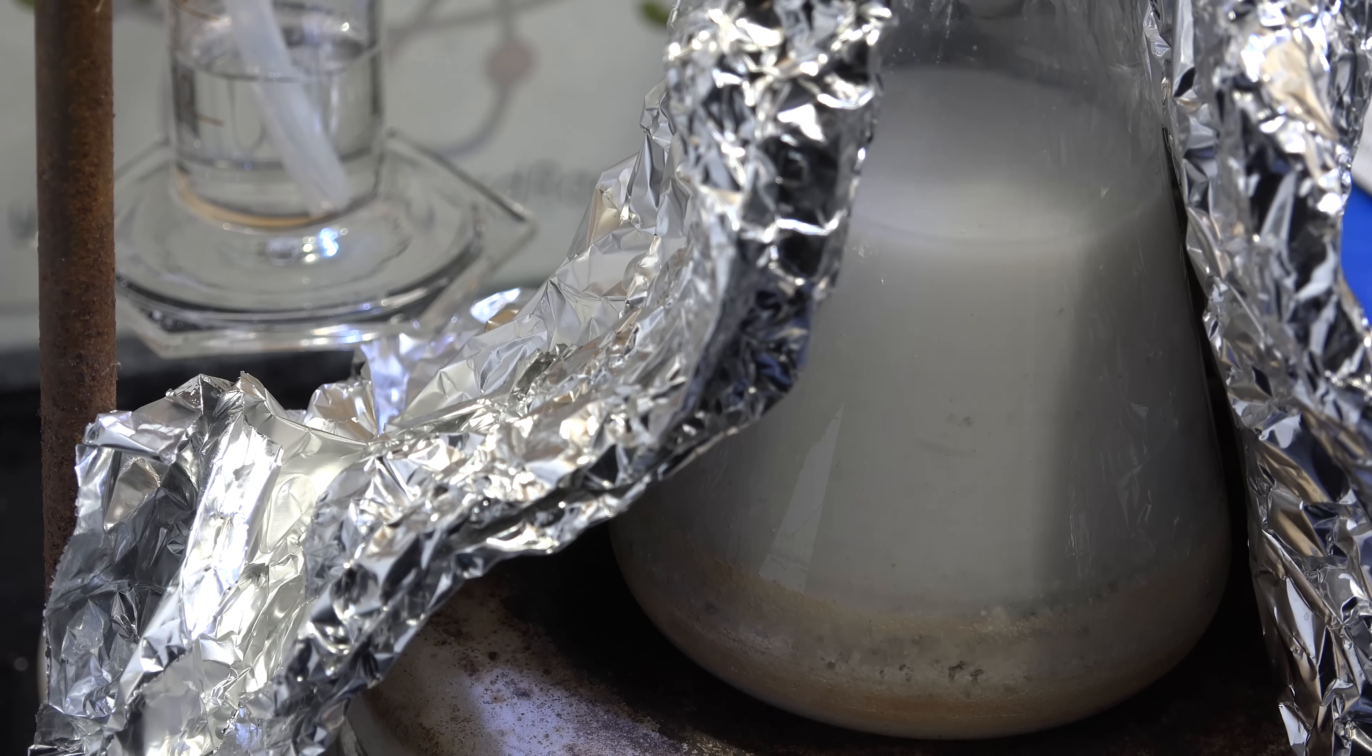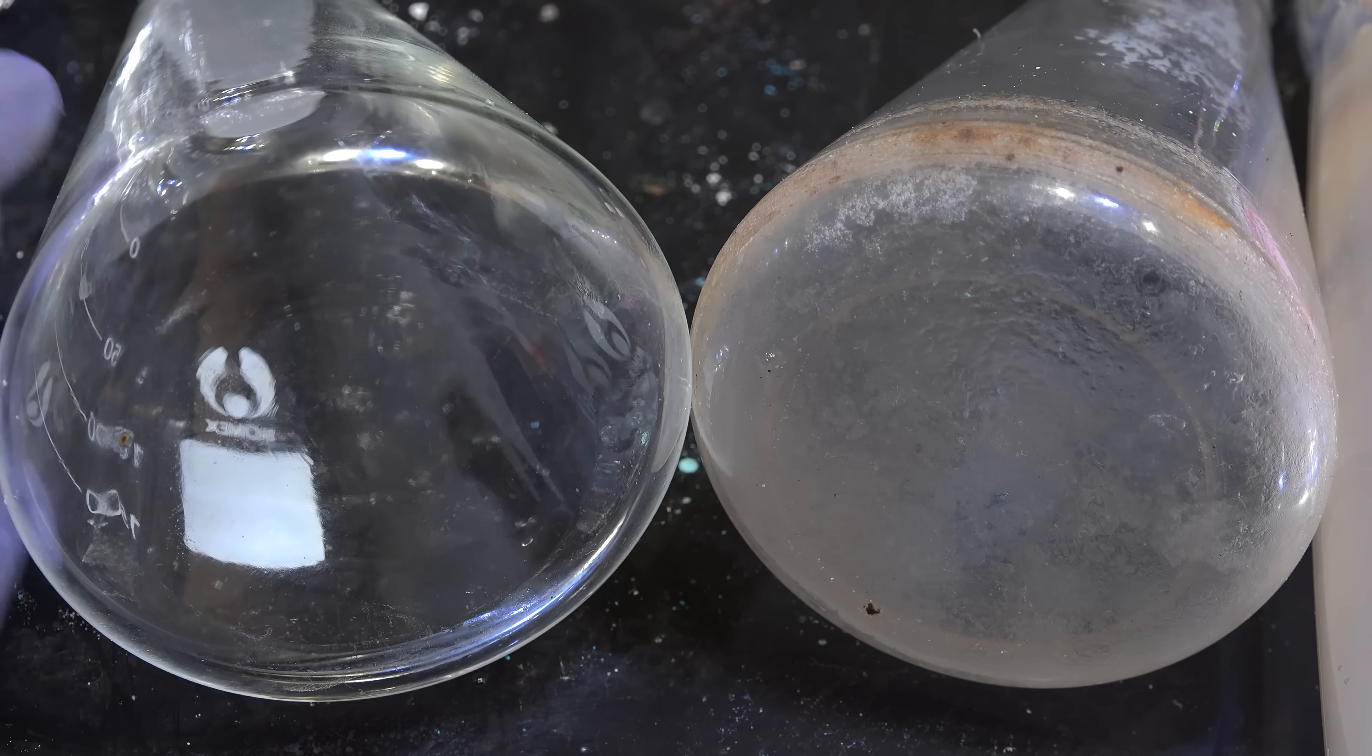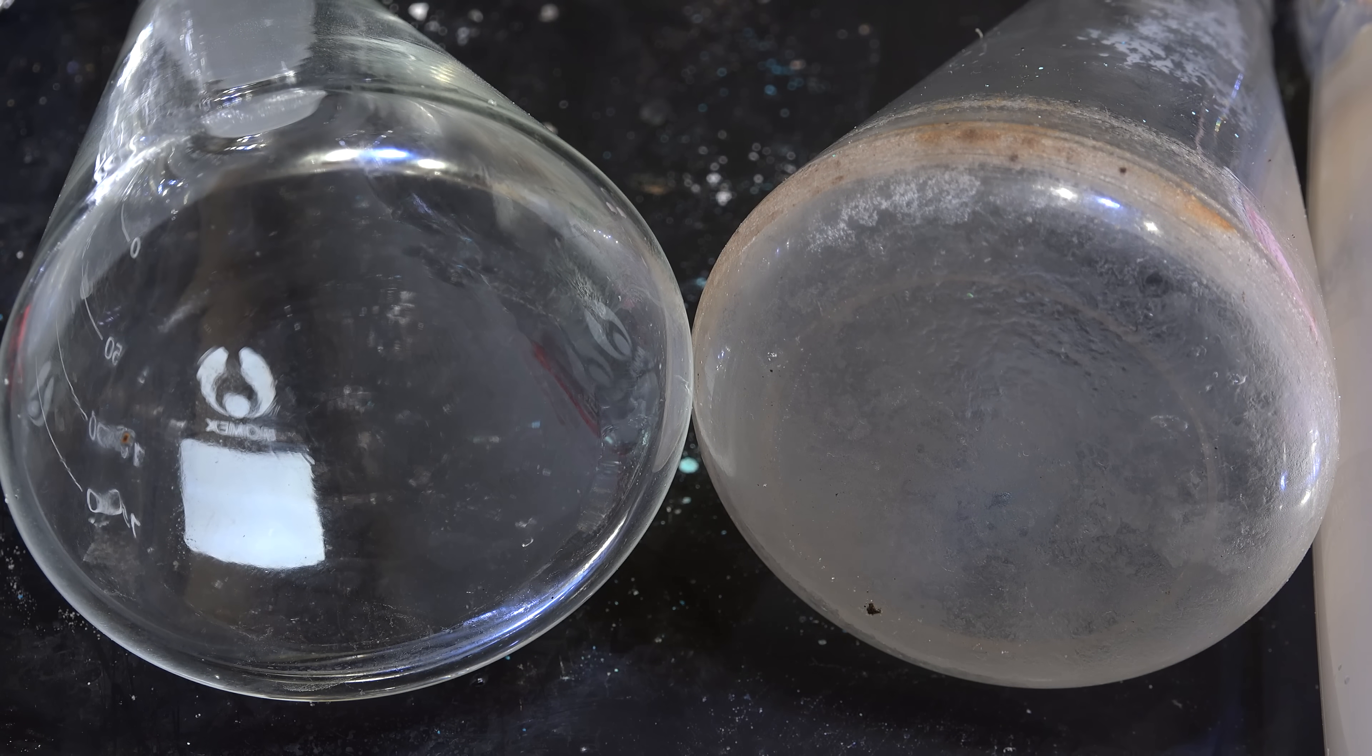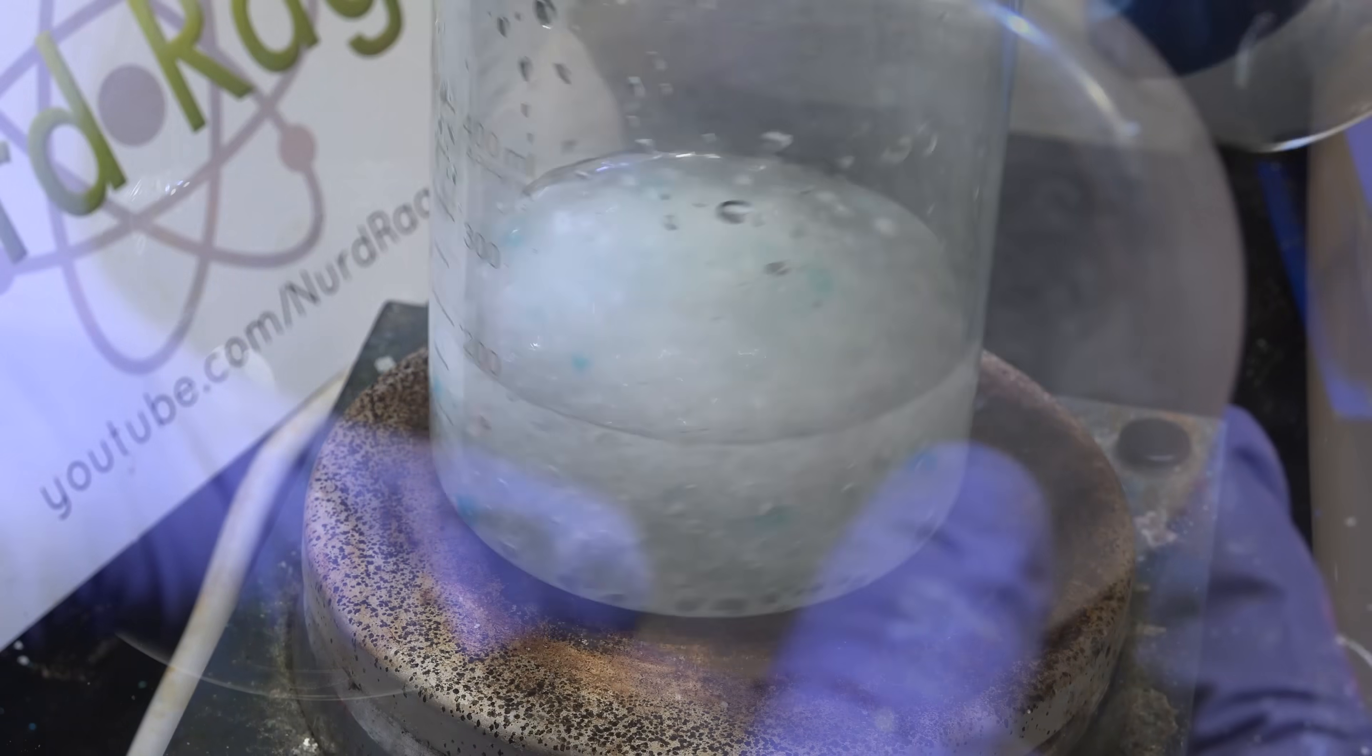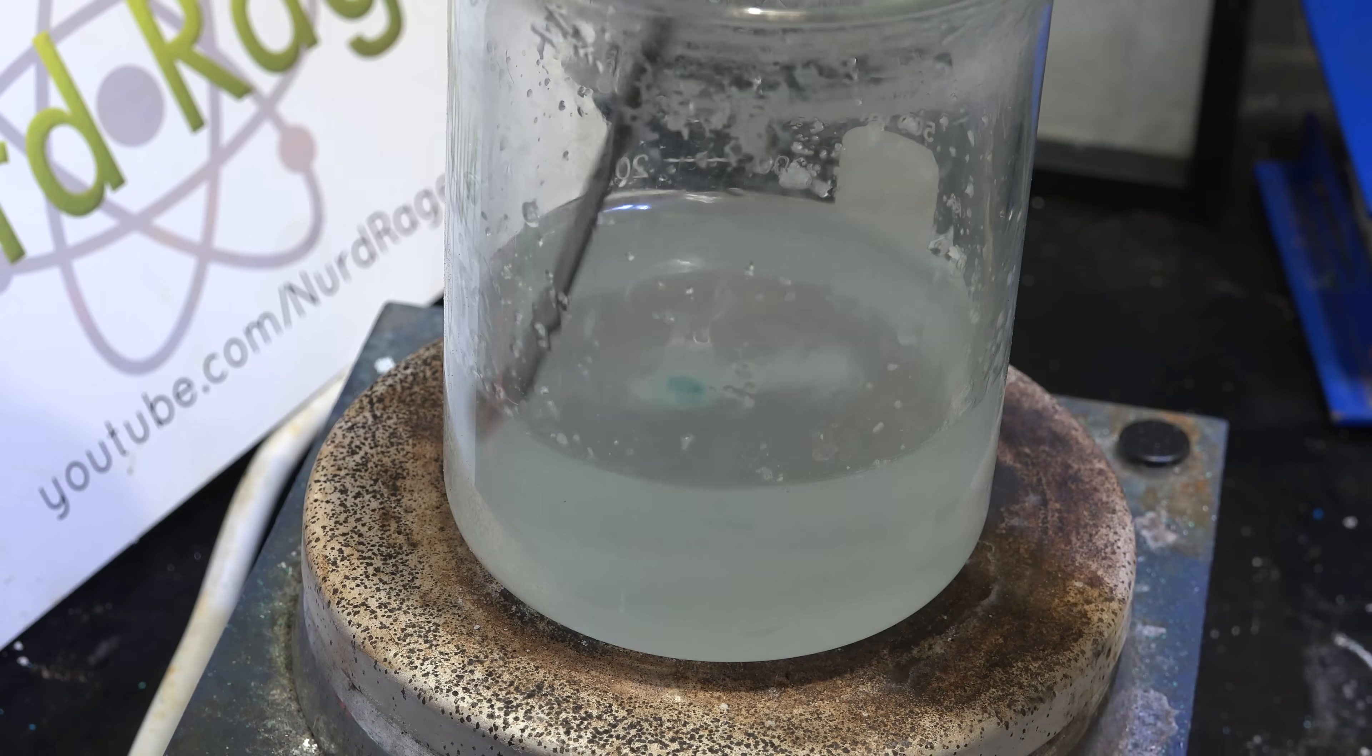The second issue is damage and cost. The reaction mixture is very damaging to glassware. Expensive borosilicate laboratory glassware. Sodium hydroxide is well known for dissolving silicon dioxide, including the silicon dioxide that glass is made out of. In fact we exploit this property to make sodium silicate as shown in previous videos.